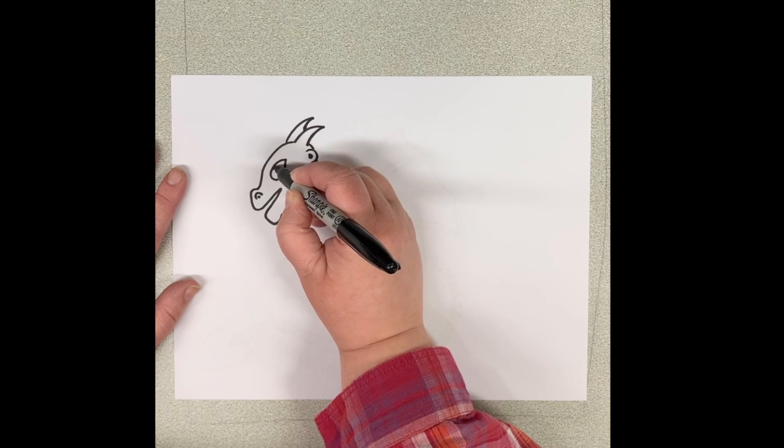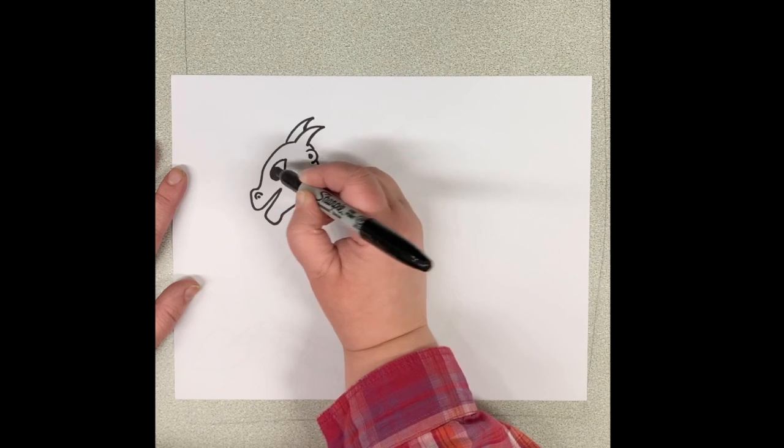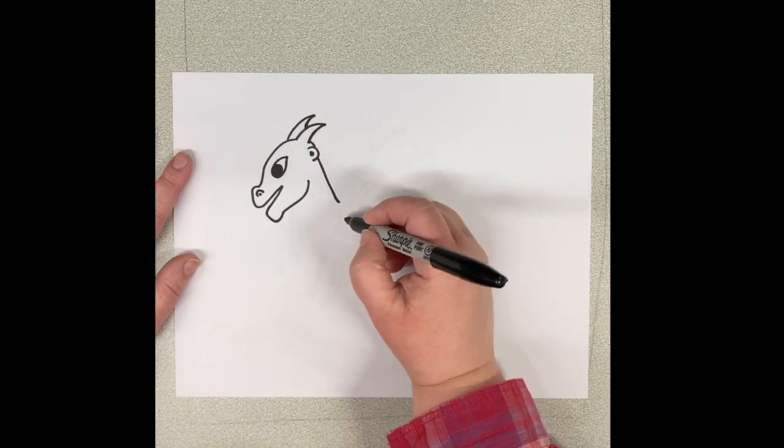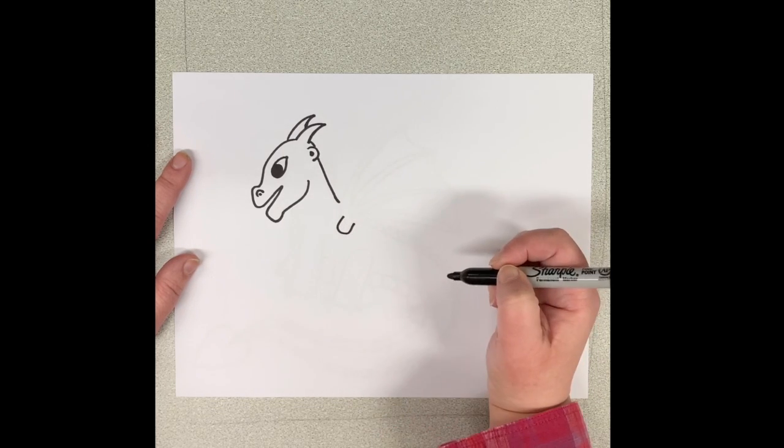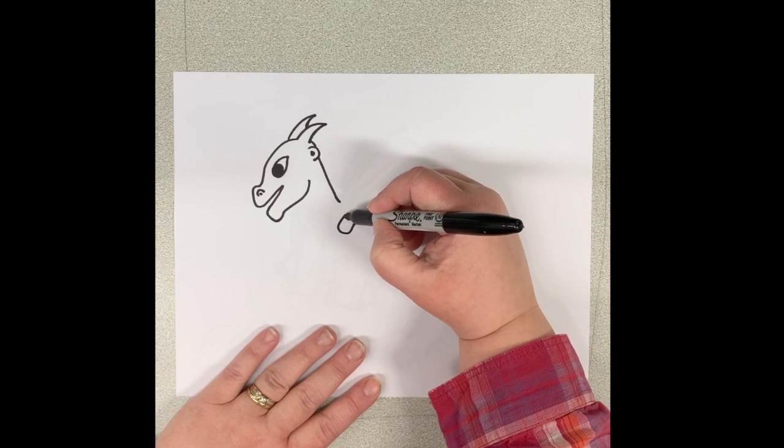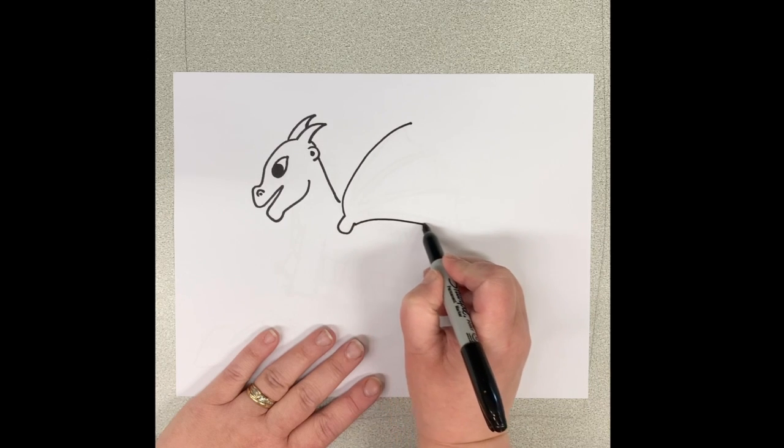You don't have to color the eye in. I colored mine in black, but you could color yours in any color with any marker that you'd like. Now we're going to start on the wing. So we're going to make a little U shape. And then we're going to make a really long line coming up on the front and another one at the back.